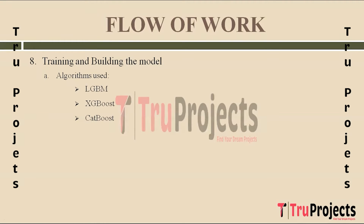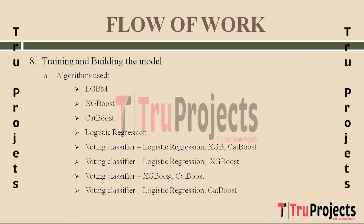CatBoost is robust, handles overfitting well, and is useful when dealing with real-world banking data. Logistic Regression is a fundamental binary classification algorithm serving as a baseline model for fraud detection — simple to understand and providing insights into feature importance. The Voting Classifier combines predictions from multiple models such as Logistic Regression, XGBoost, and CatBoost to make a final prediction, leveraging collective intelligence for improved accuracy and robustness.